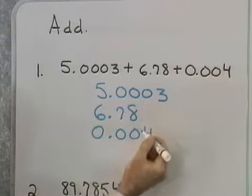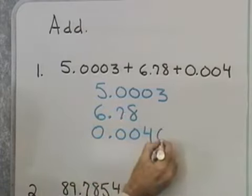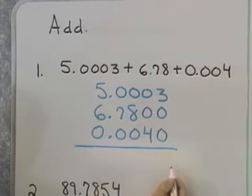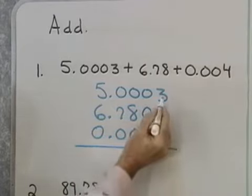So what I'm going to do is write them vertically with the decimal points aligned. Now, it's okay if we want, when we're doing this addition, to think of zeros as being here if you want to see all the numbers lined up. You don't need to write those if you don't want.